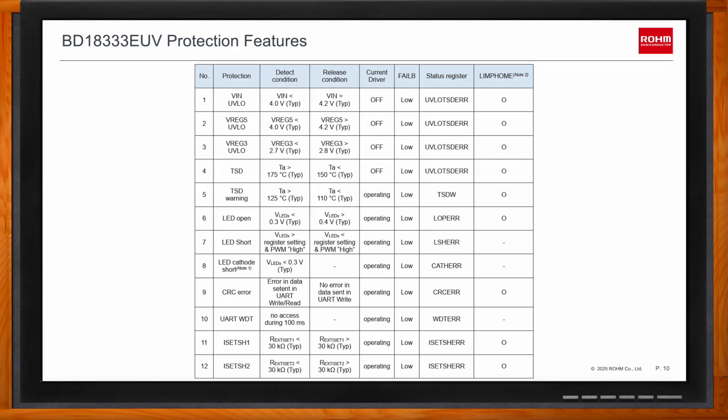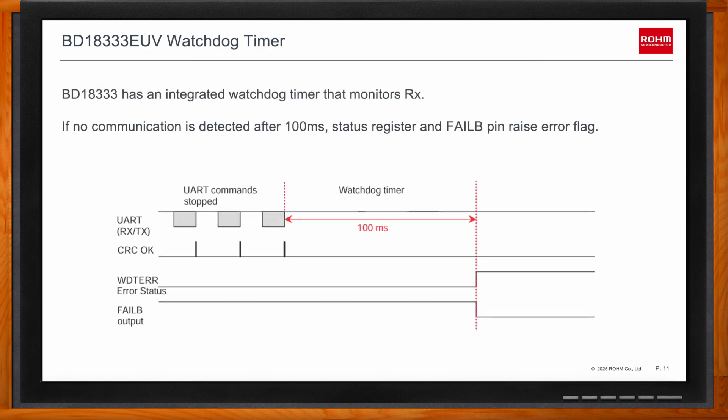Watchdog timers are also a crucial component of ASIL systems — can we look at that aspect? This is a standard watchdog timer, but it's a frequently asked-about feature and a must-have in ASIL systems. The watchdog monitors the RX pin for UART commands, and if no communication is detected after 100 milliseconds, both an error status register and the FAIL B pin are toggled.